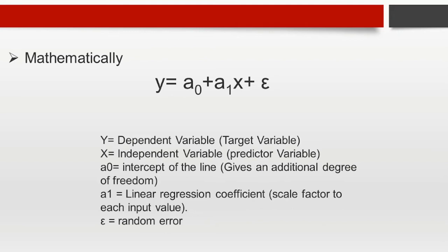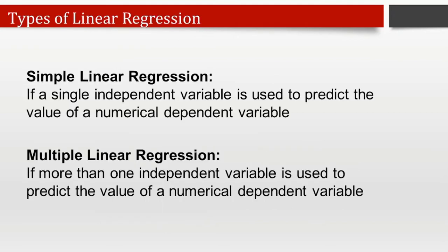Now the types of linear regression. Linear regression can be classified into two types: simple linear regression and multiple linear regression. Simple linear regression: if a single independent variable is used to predict the value of a numerical dependent variable, it is called simple linear regression. Multiple linear regression: if more than one independent variable is used to predict the value of a numerical dependent variable, it is called multiple linear regression.